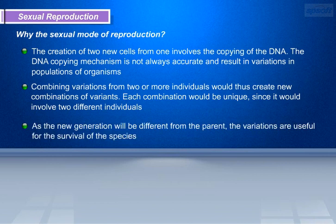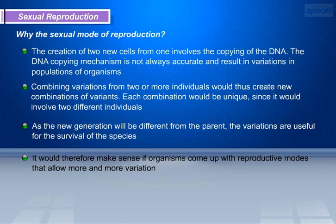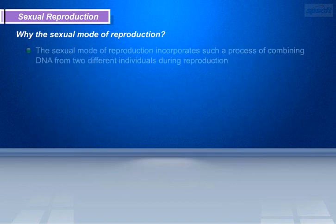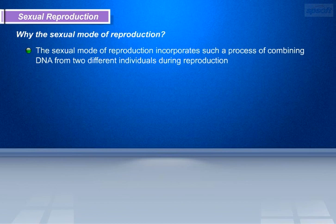As the new generation will be different from the parent, the variations are useful for the survival of the species. It would therefore make sense if organisms come up with reproductive modes that allow more and more variation. The sexual mode of reproduction incorporates this through the process of combining DNA from two different individuals during reproduction.